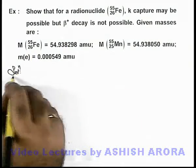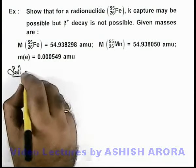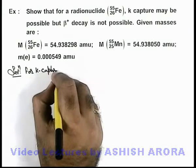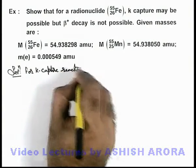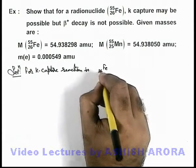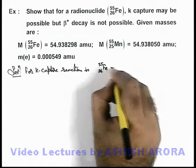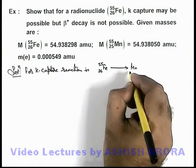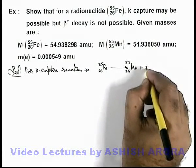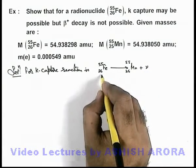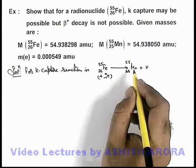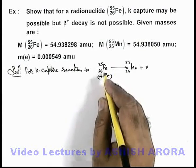Now in the solution we can check both possibilities. For K-capture, the reaction is: iron-55 (26, 55) decays to manganese-55 (25, 55) and a neutrino is emitted. In this situation, the iron is combining with the K-shell electron, which we are not writing here because this is not a particle from outside being added.